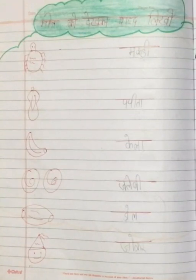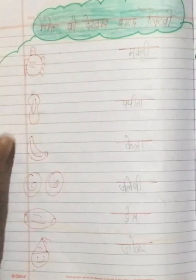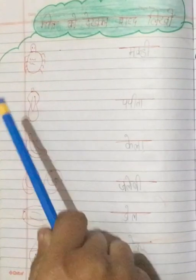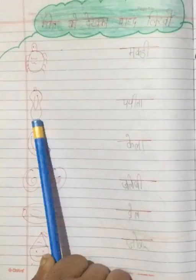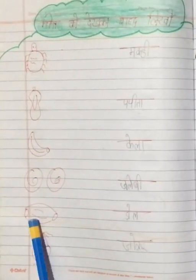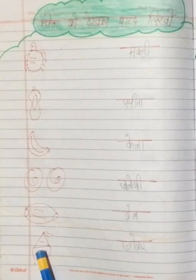So first of all, take out your Hindi notebook and today's topic is Chitra ko dekkar Shabd likho. So look at the picture and write down the correct Shabd. Students, so yeh kya hai? Makdi. Or yeh kya hai? Papita. Or yeh kya hai? Kela. And this is jalebi and this is dol and this is jokar.